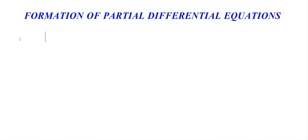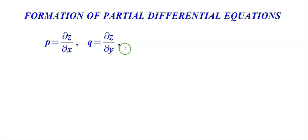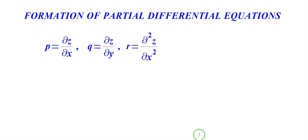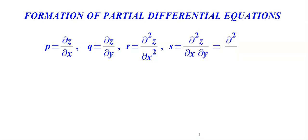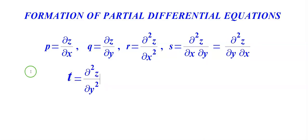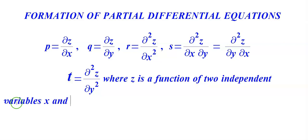There are 5 notations used to form the partial differential equation, and understanding and remembering each of them is essential for solving problems in this section. The 5 notations are: p = ∂z/∂x, q = ∂z/∂y, r = ∂²z/∂x², s = ∂²z/∂x∂y = ∂²z/∂y∂x, and t = ∂²z/∂y², where z is a function of two independent variables x and y.